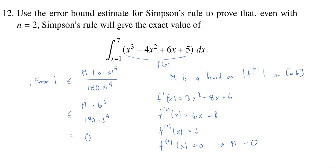So this is equal to 0. So the error, no matter which n we choose, is actually going to be 0.